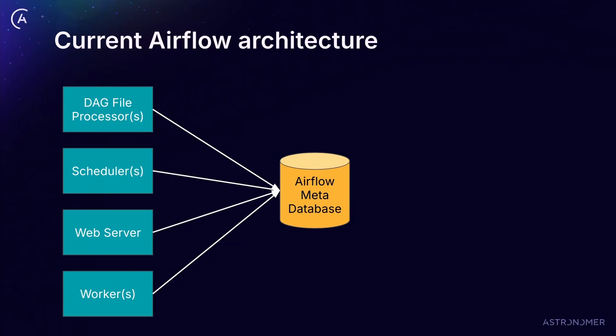For anybody who's used Airflow, you understand how the architecture works, but here's a quick high-level overview. The DAG file processor reads the DAGs, converts them into a serialized form stored in the Airflow metadata database. These serialized DAGs are viewed by the scheduler, which, when the time is right, starts scheduling individual tasks when their dependencies are met, and sends each task over to an available Airflow worker. These workers look at the context for that task, start executing, and report the status back to the meta database.